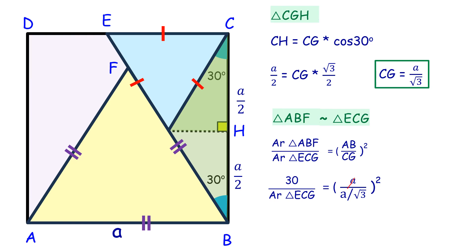The a cancels out, leaving (√3)², which equals 3. Therefore, the area of triangle ECG is 10 square centimeters.